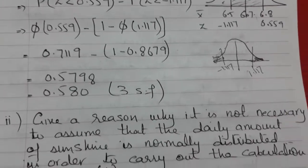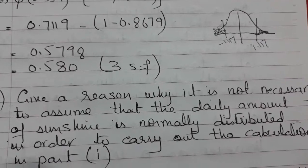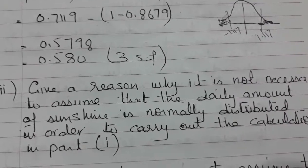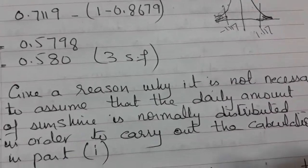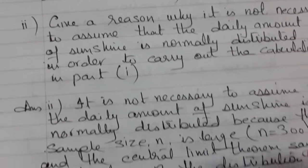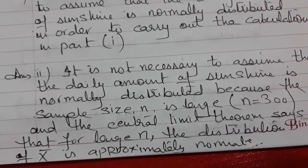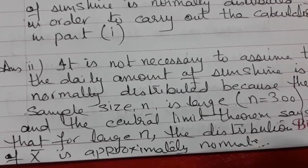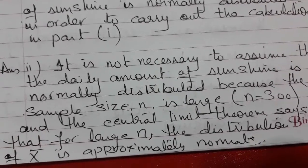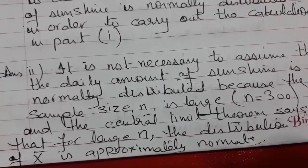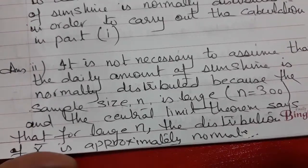The second part of the question asks: give a reason why it is not necessary to assume the daily amount of sunshine is normally distributed in order to carry out the calculation in part 1. The answer is: because the sample size is large enough. By the Central Limit Theorem, for large samples the distribution of the sample mean is approximately normal, regardless of the underlying population distribution.